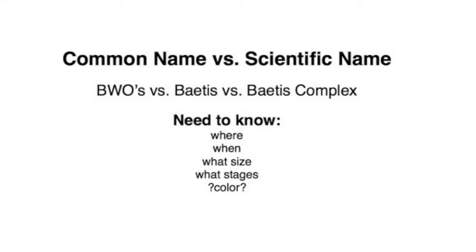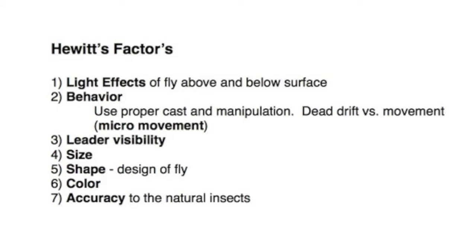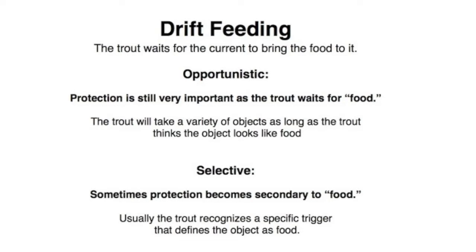I will commonly use a common name, for example blue-winged olive, to include not only Baetis and Baetis complex, but some Ephemerella, as long as they have slate gray wings and olive bodies, because these can all be fished very similarly. If the mayfly requires a different mode of fishing, then I might use the scientific name. As we tie our flies, let's remember Hewitt's factors, as well as whether we are tying them for opportunistic feeding or selective feeding.